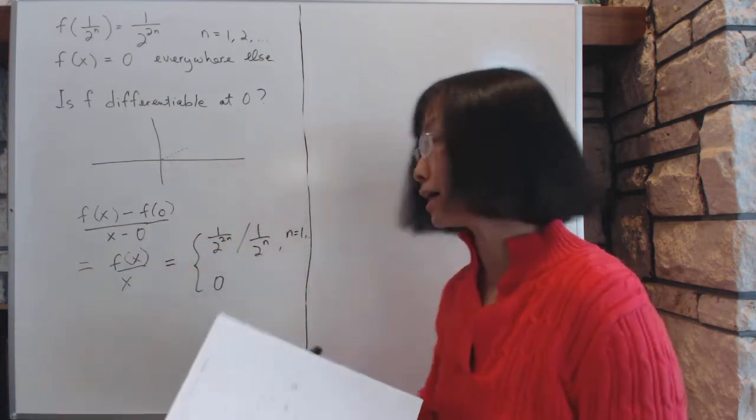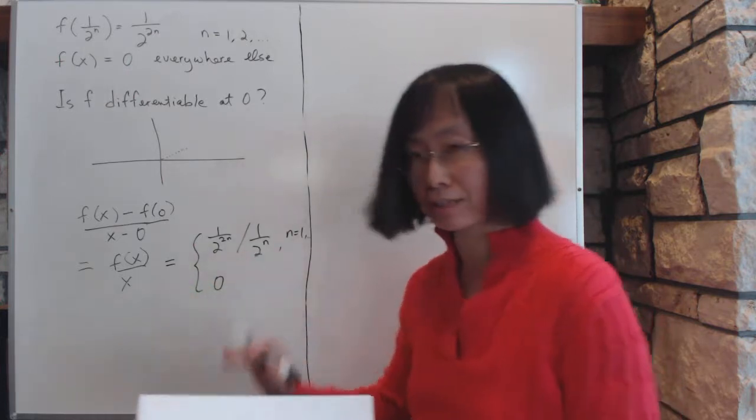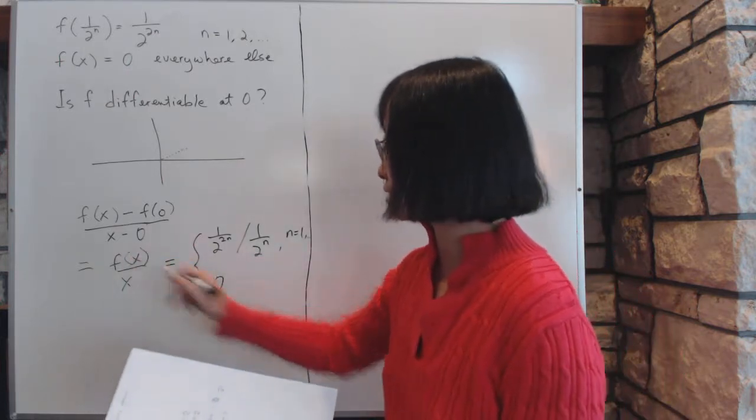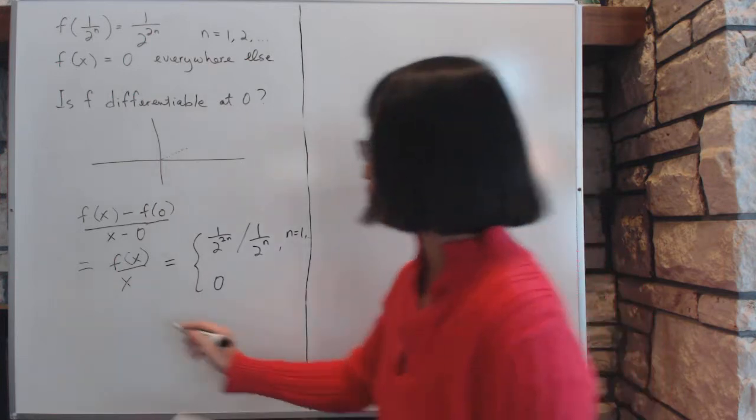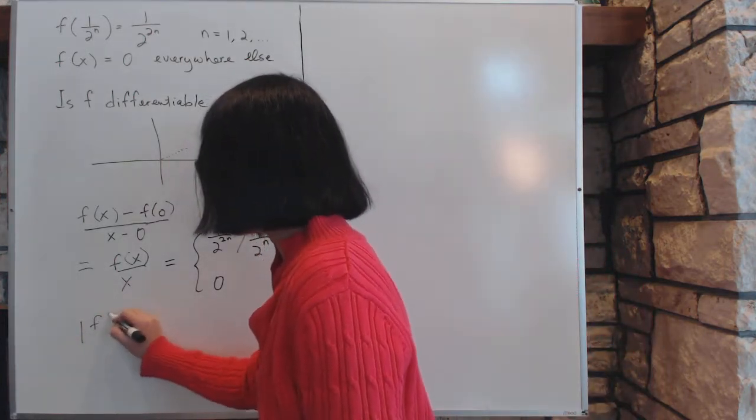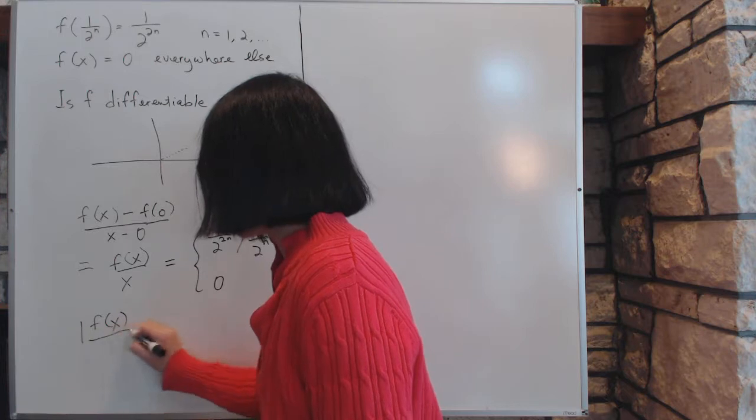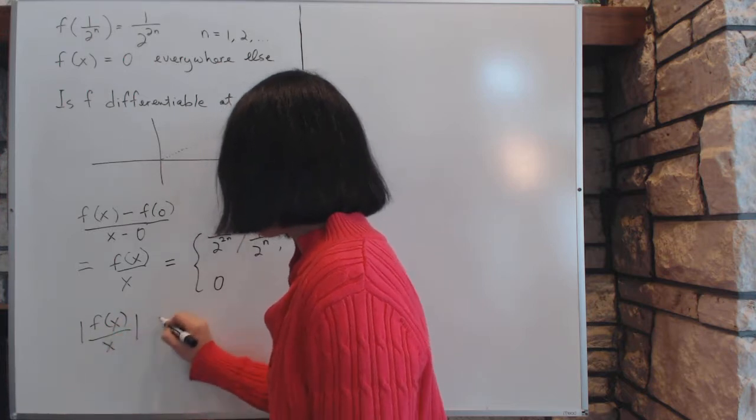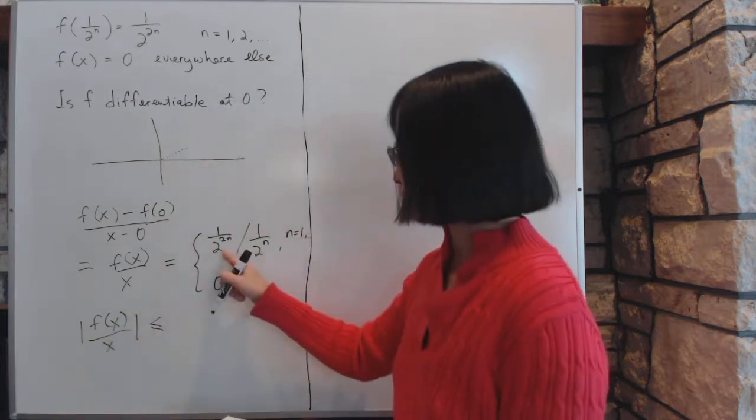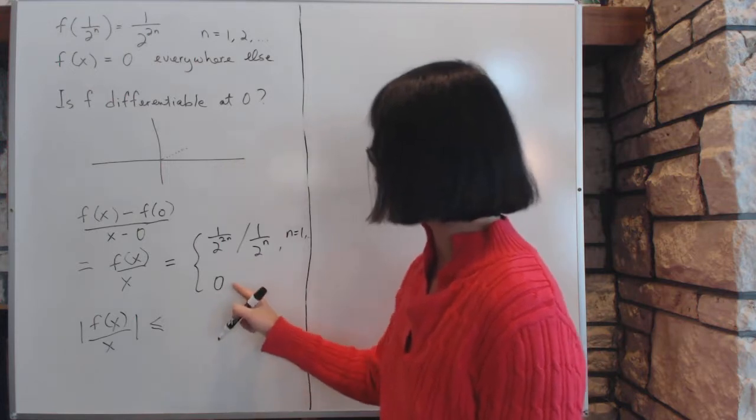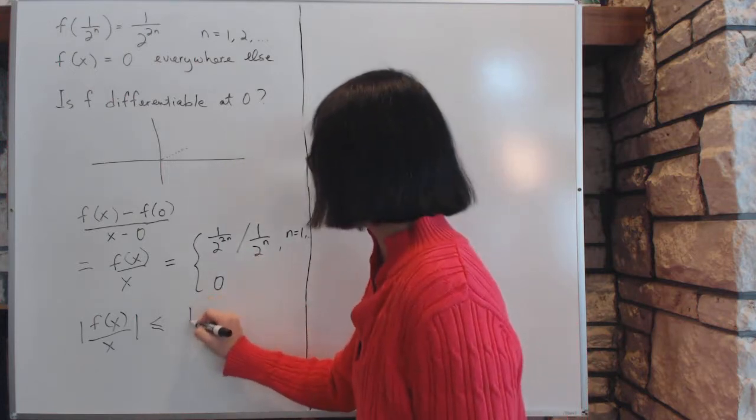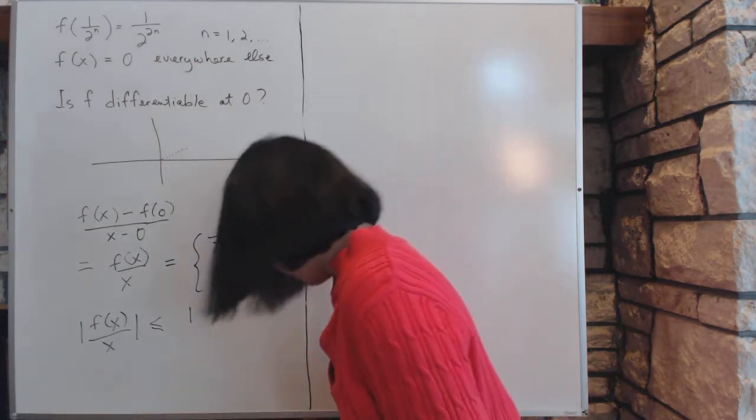So as it approaches there, when x is not 0 but just getting close, this thing is going to be 0. That means the absolute value of this thing is going to be less than or equal to this fraction right here, because it's either 0 or this thing.